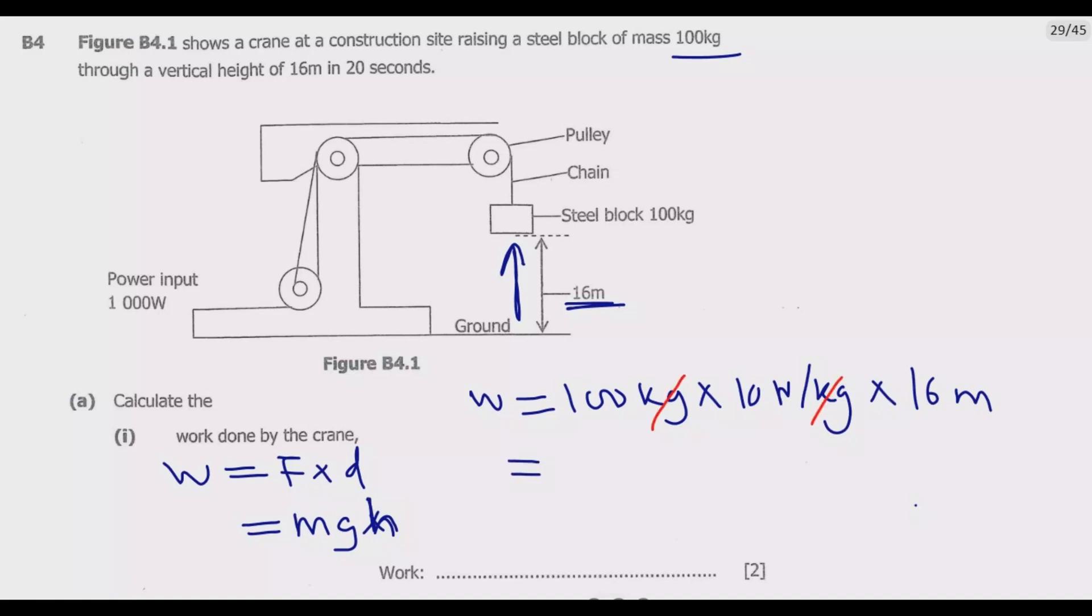When we multiply, you notice the kg cancels. Then multiply 10 times 100, it will be 1000 newtons times 16 meters, which gives us 16,000 joules. This is a common question that always comes in an exam.